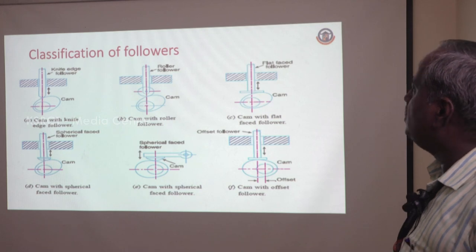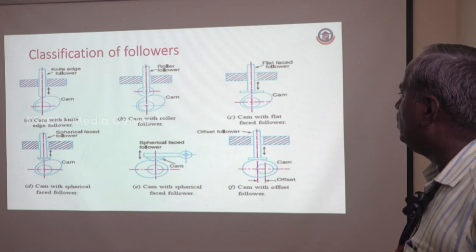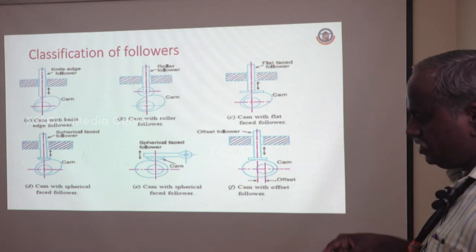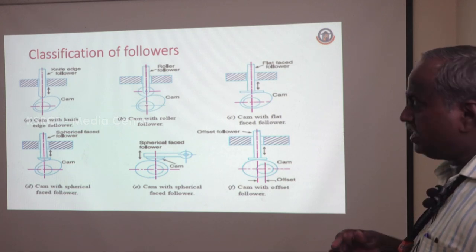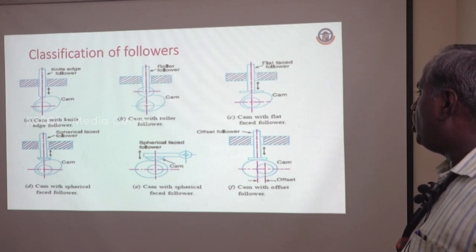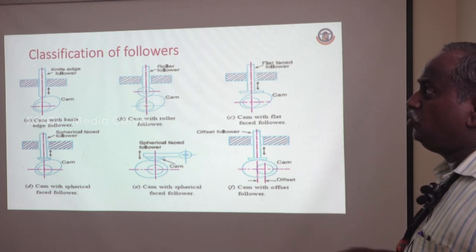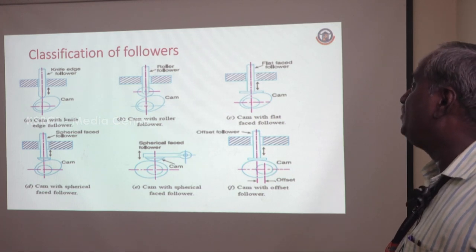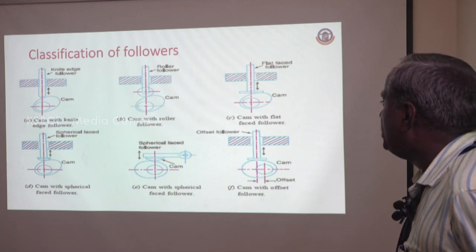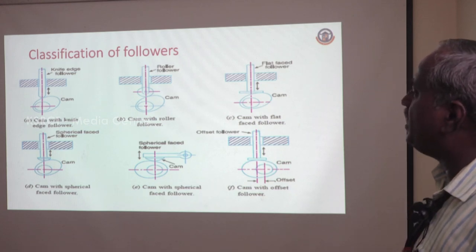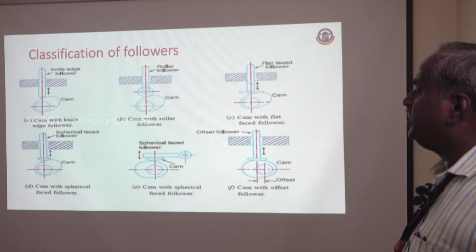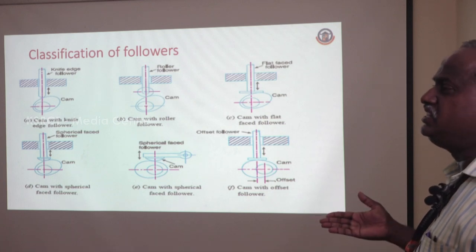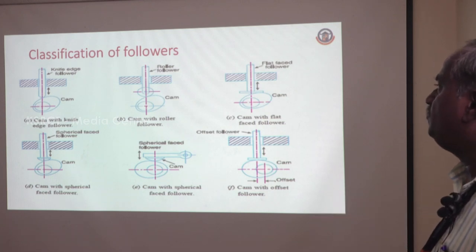In order to avoid this wear and tear, the next type of follower was developed — that is called the roller follower. Here, the contact between the CAM profile and the follower is a line contact, so different lines come into contact over the surface of the CAM, resulting in very less wear and tear. Moreover, the operation will be very smooth compared to the knife-faced follower. In the case of the knife-faced follower, there is a chance of getting jammed when the pressure angle is very steep, but in the case of the roller follower, it is not like that.